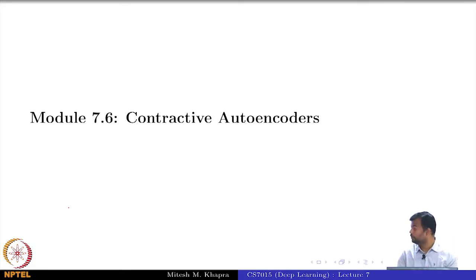With that we will move on to something known as contractive autoencoder. This is yet another type of autoencoder, again with the same aim that you want to do some kind of regularization.